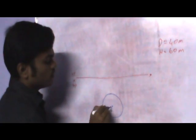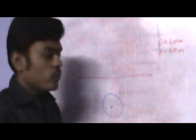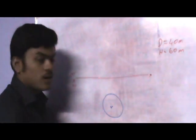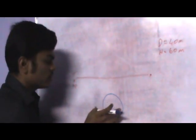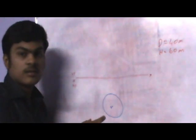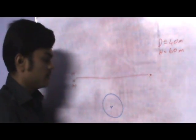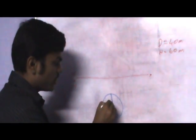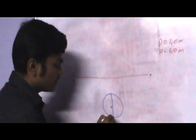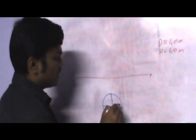This is the point O. I am going to project this solid. I am going to divide the circle into 8 or 9 equal parts.